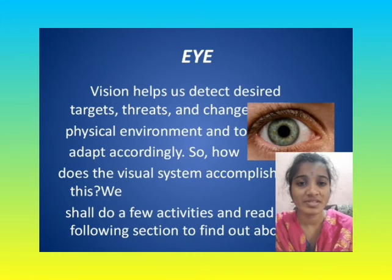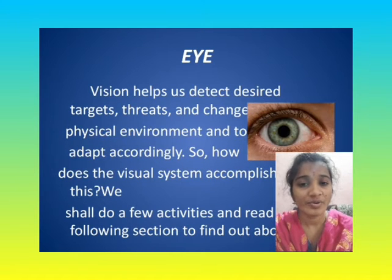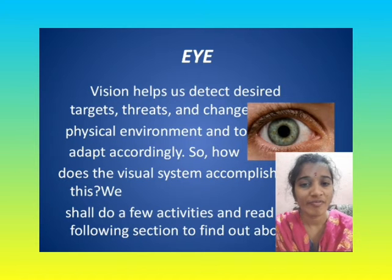Vision helps us detect desired targets, threat, and changes in the physical environment, and to adapt accordingly. How does the visual system accomplish this? We shall do a few activities and read the following section to find out about the Eye.